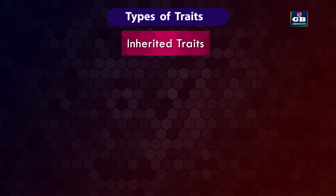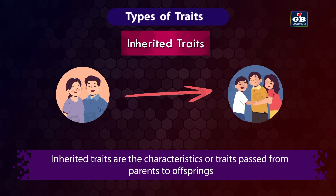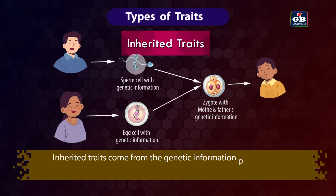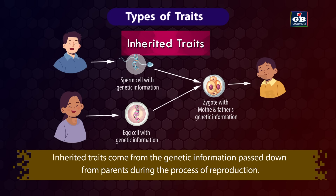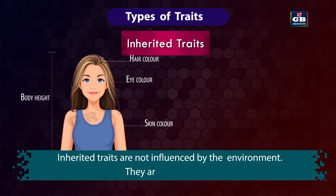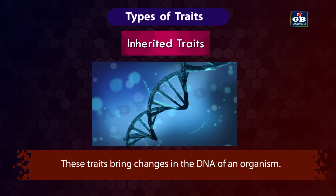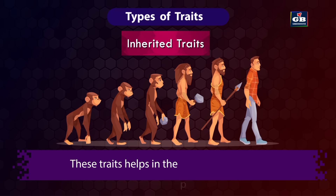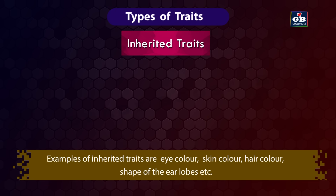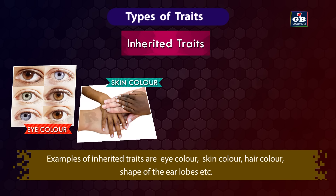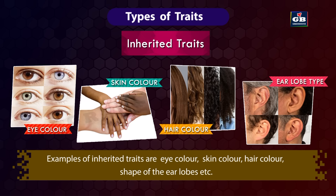Inherited traits are the characteristics or traits passed from parents to offspring. They come from the genetic information passed down from parents during reproduction. Inherited traits are not influenced by the environment — they are fixed at birth. These traits bring changes in the DNA of an organism and help in the process of evolution. Examples include eye color, skin color, hair color, and shape of the earlobe.